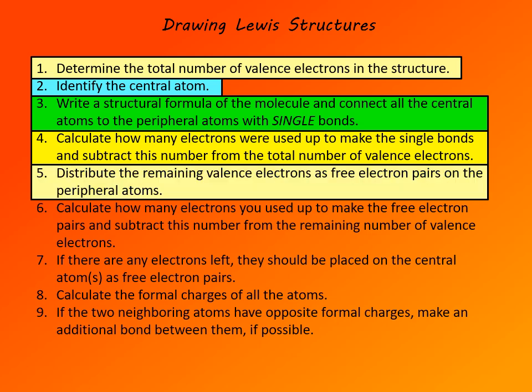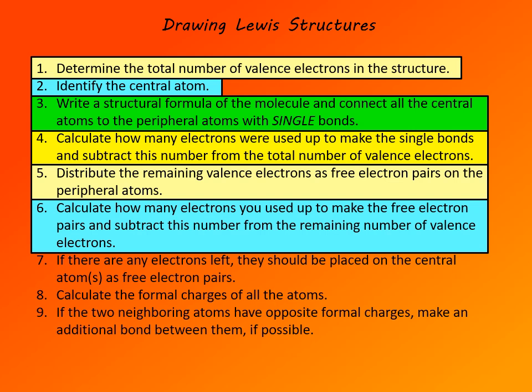In step 5, distribute the remaining valence electrons as electron pairs on the peripheral atoms, up to three electron pairs each, following the octet rule — do not exceed the octet even if the peripheral atom could expand it. Keep in mind that any bond already present contributes 2 electrons. Then calculate how many electrons were used in step 5 and subtract that total from the electrons remaining. This may leave 0 electrons, in which case move directly to step 8. If electrons remain, place them on the central atom as electron pairs in step 7.